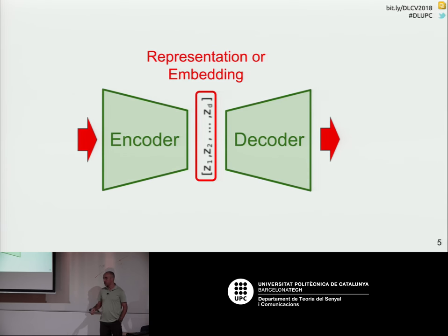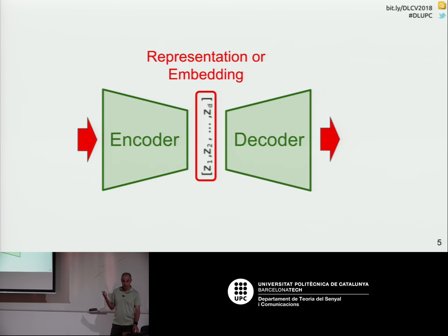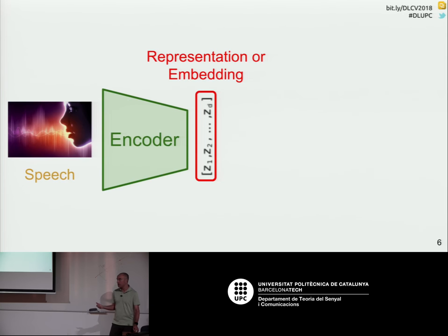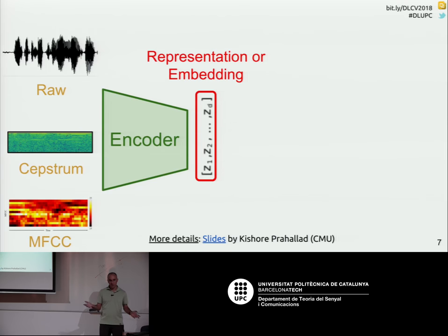I'll follow the same approach as earlier — taking back the idea of the encoder and decoder. These are neural networks that we're going to train if we manage to have enough data, find the right loss functions, and have enough GPUs. So now, if you want to do things on speech, probably the first question is: how can I process speech? If you look in the literature, you see that people have tried different things.